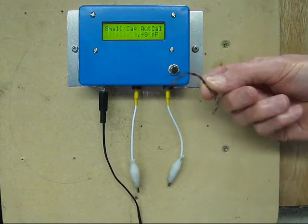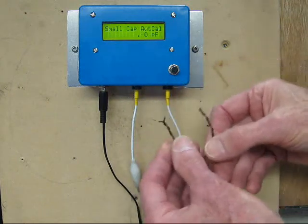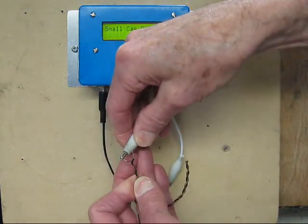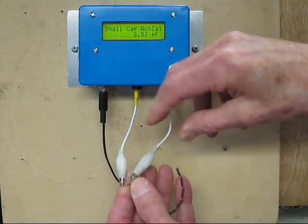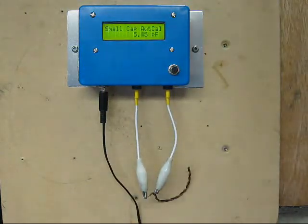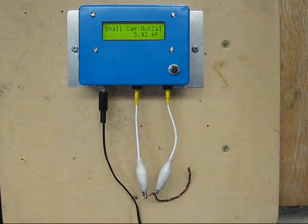But the beauty of this meter is it will read right down to the picofarad range. This is what the hams would call a gimmick. Two twisted wires. Five point four three picofarads.